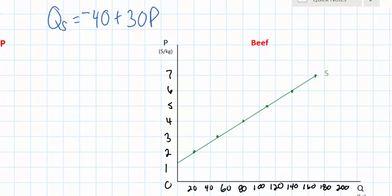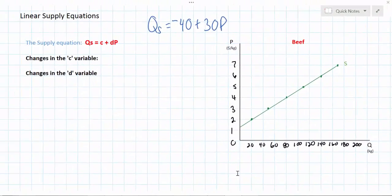In this video we'll discuss the things that can change in the supply equation and talk about how a change in either the c or the d variable can affect the supply for a particular good.